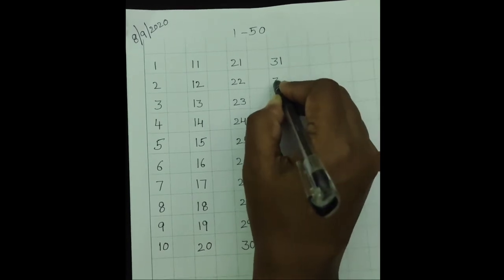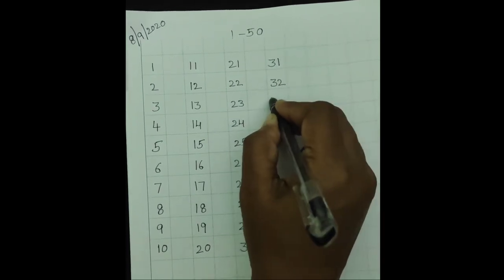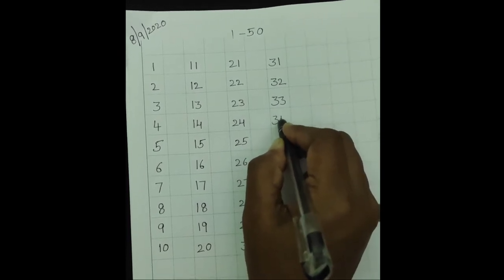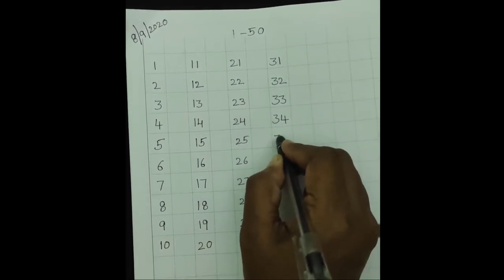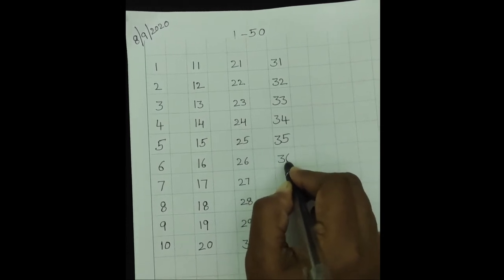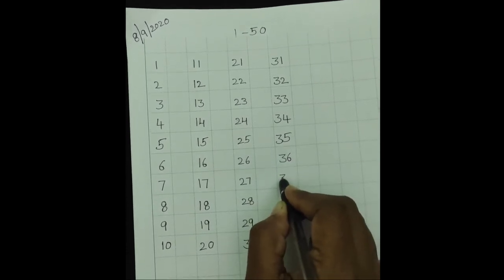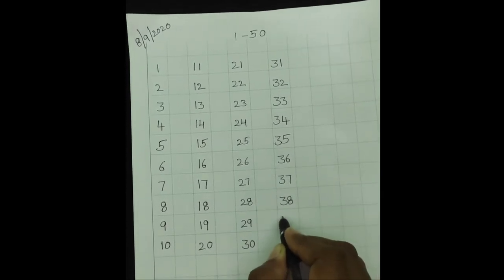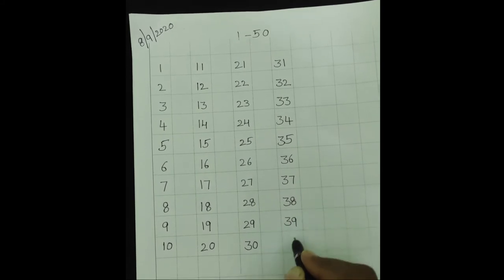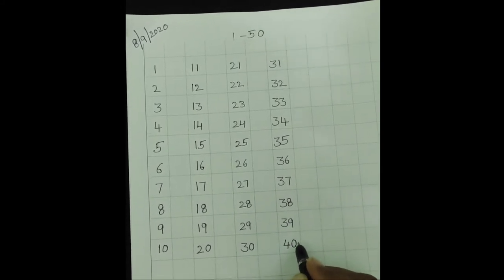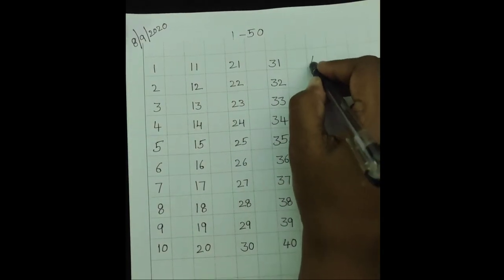3, 1, 31, 3, 2, 32, 3, 3, 33, 3, 4, 34, 3, 5, 35, 3, 6, 36, 3, 7, 37, 3, 8, 38, 3, 9, 39, 4, 0, 40. Leave one line.